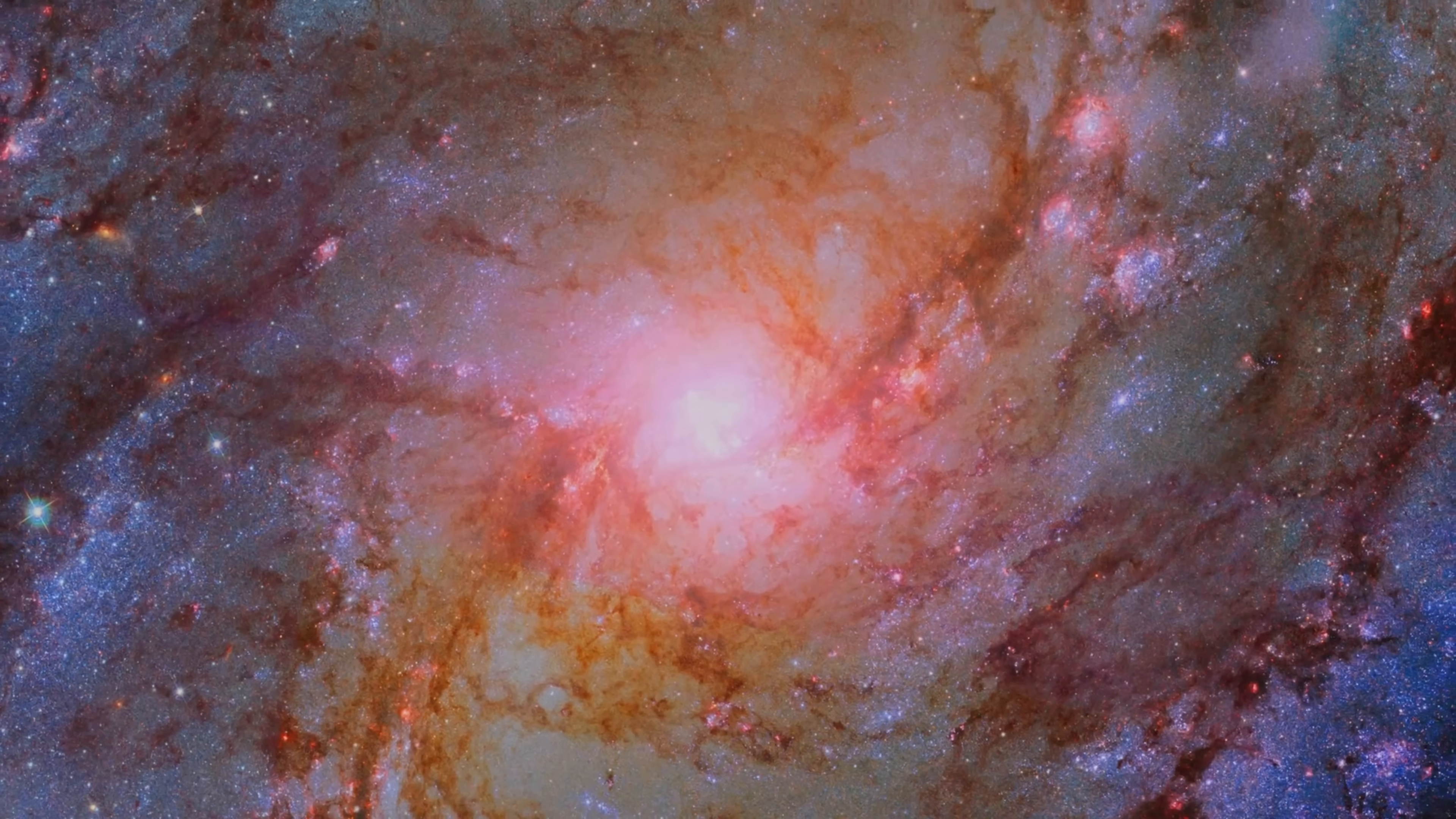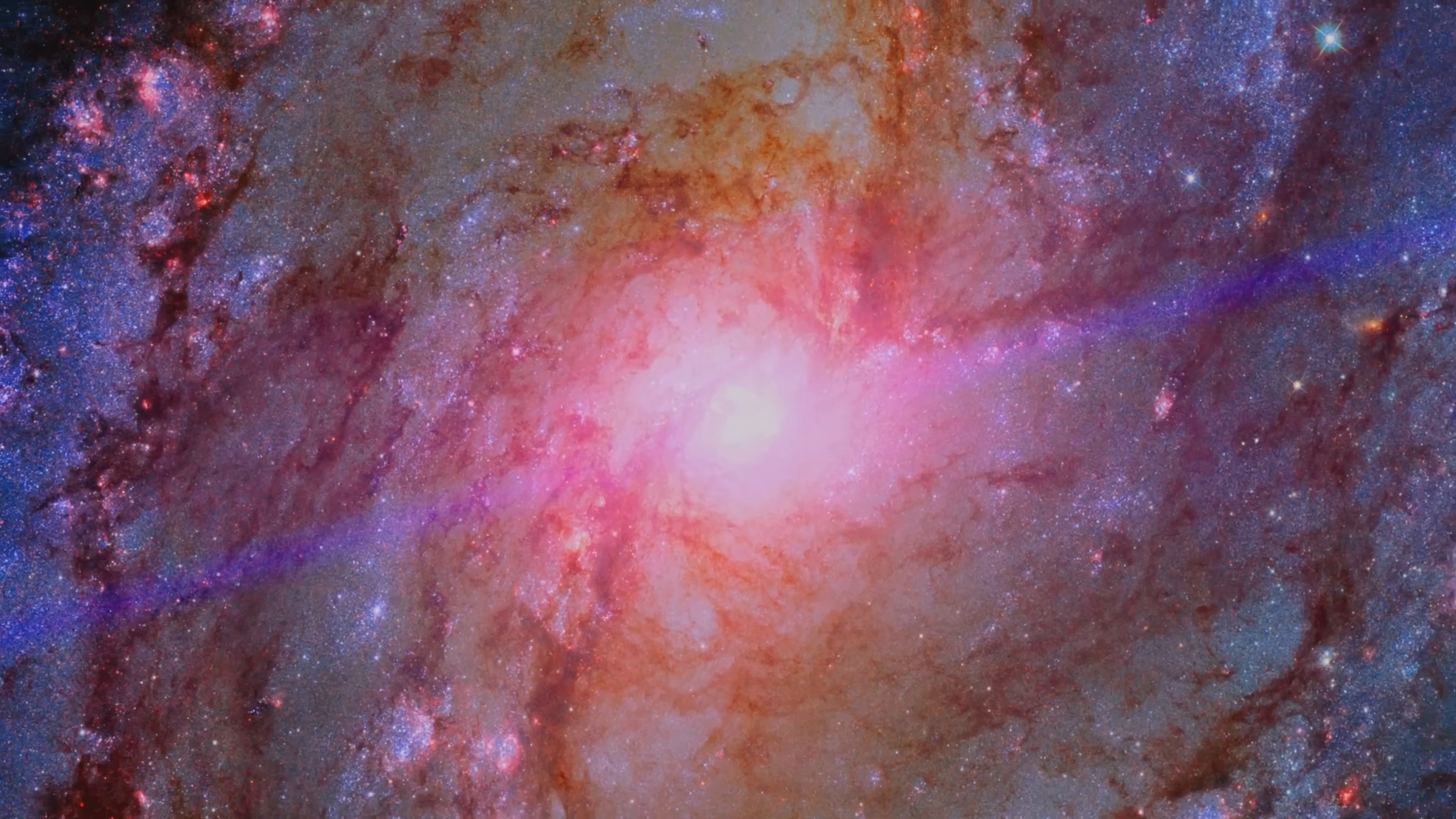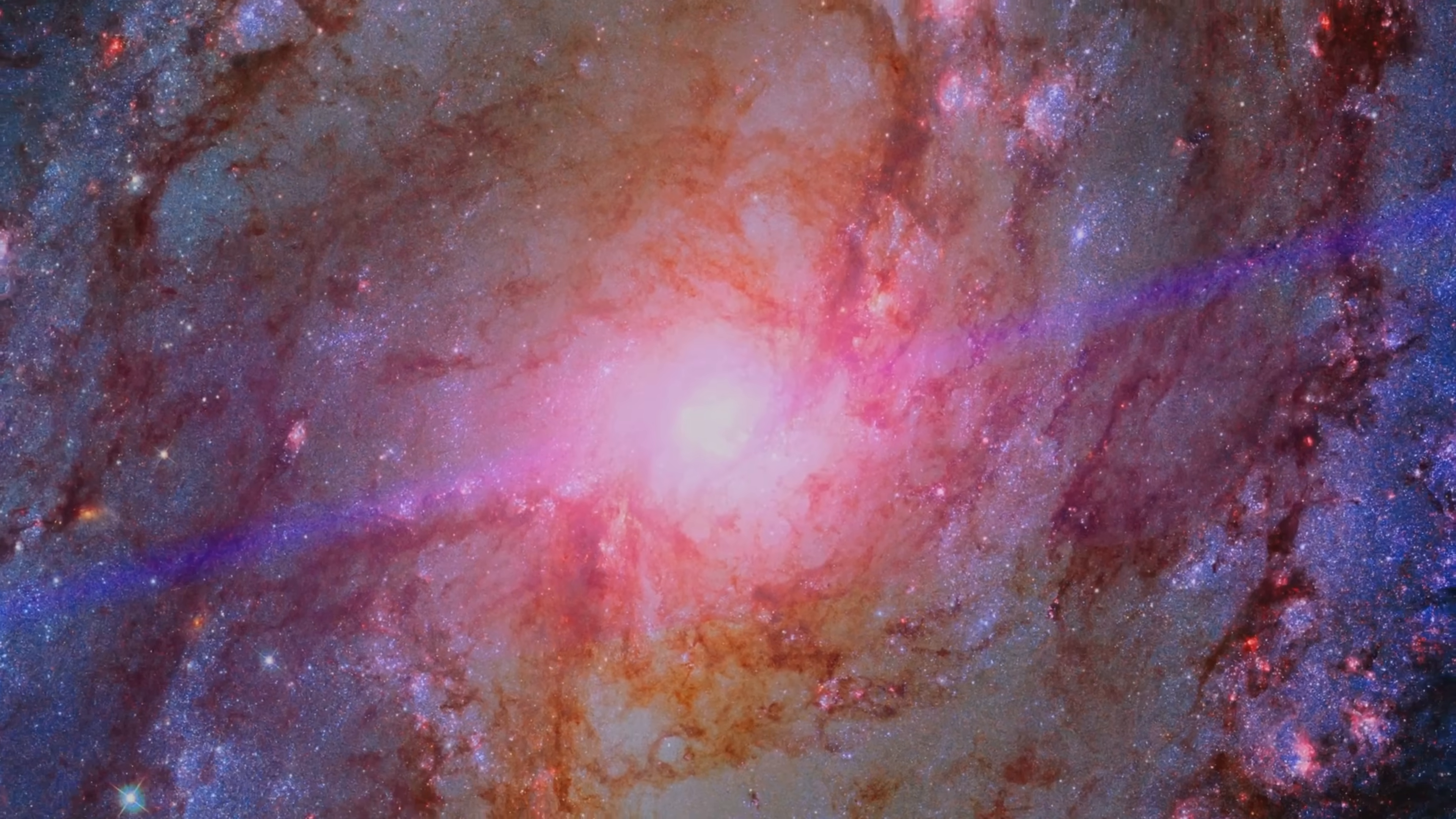The Milky Way is constantly rotating, and our sun orbits the galactic center once every 230 million years. This immense journey takes our solar system through different regions of the galaxy, each with its own unique characteristics and conditions. The rotation of the Milky Way is a reminder of the dynamic and ever-changing nature of our universe.